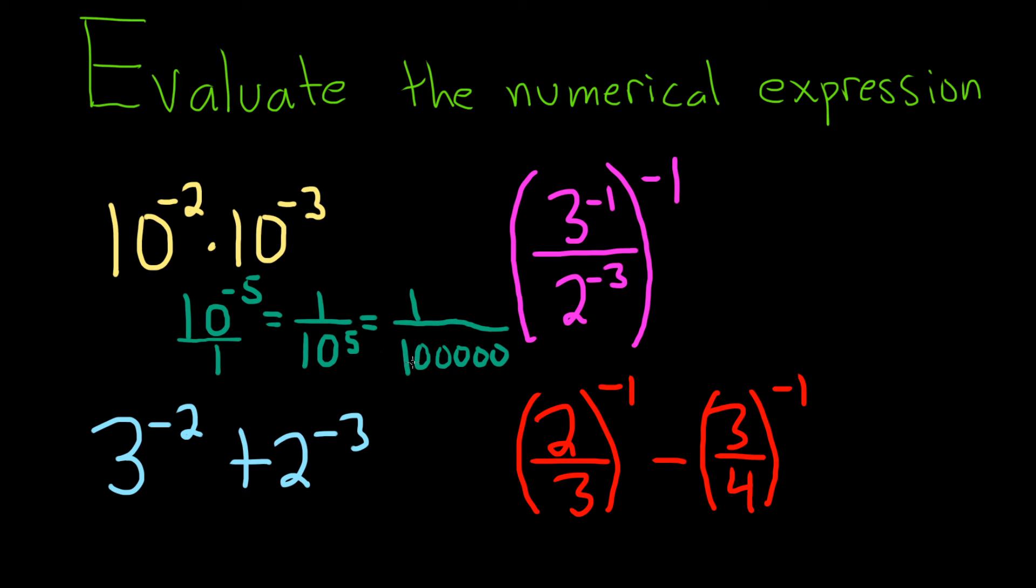You have 10 to a power, it's just a 1, and then the exponent is the number of zeros. So that's the first answer.